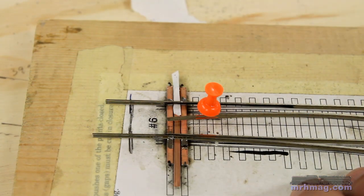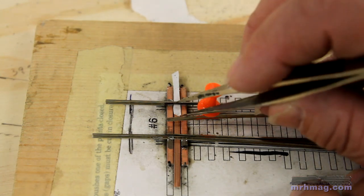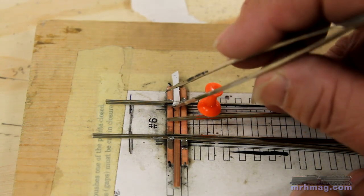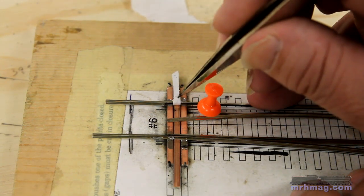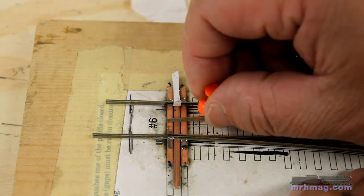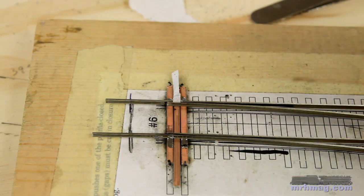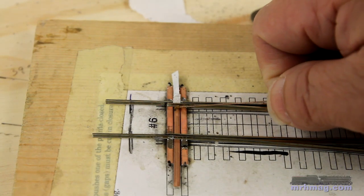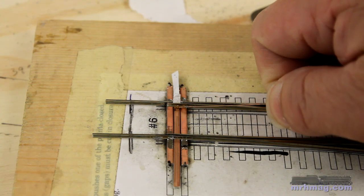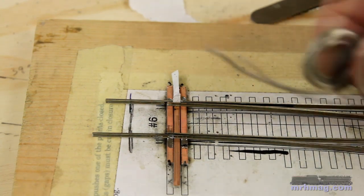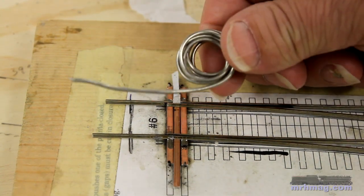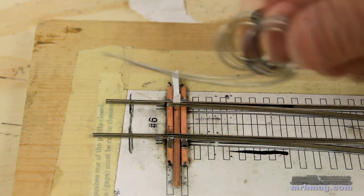When soldering the points to a PC tie throw bar I put a small piece of paper between the point and the stock rail threading it under the stock rail. This helps prevent soldering the points to the stock rail. I applied a tiny dab of soldering flux to the point and throw bar. This will make the soldering operation nearly instantaneous. I use silver bearing solder to attach points to throw bars. It's much stronger than electronic solder.